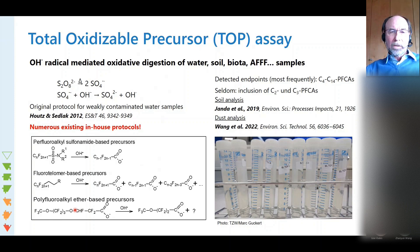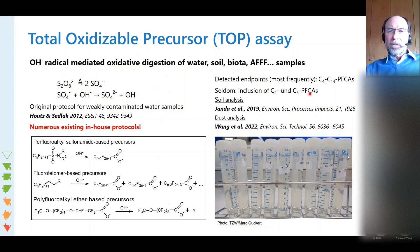Some fluoroalkyl ether-based precursors have also been oxidized and shown to give an ether carboxylic acid as oxidation product, which normally is not among the detected endpoints of target analysis. That means we can detect these carbonic acids as a placeholder for precursors we often cannot measure. The range of detected endpoints is usually C4 to C14 PFCAs, and only very seldom are C2 and C3 PFCAs - trifluoroacetic acid and the C3 acid - included.